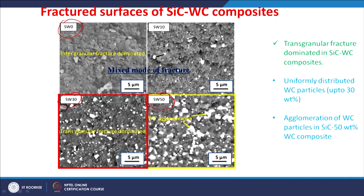The microstructures of the silicon carbide-tungsten carbide composites after fracture show intergranular fracture dominating for silicon carbide without any tungsten carbide content. Transgranular fracture is dominating when the tungsten carbide content is increased. Overall, fracture occurs by both intergranular and transgranular modes — intergranular dominates in pure silicon carbide ceramics, whereas transgranular fracture dominates with increasing tungsten carbide content.